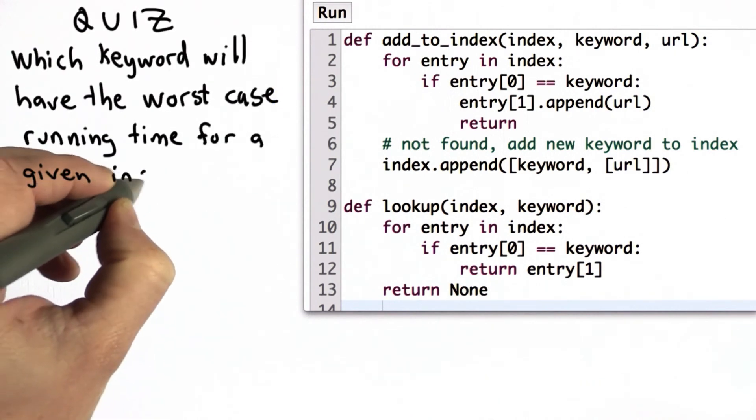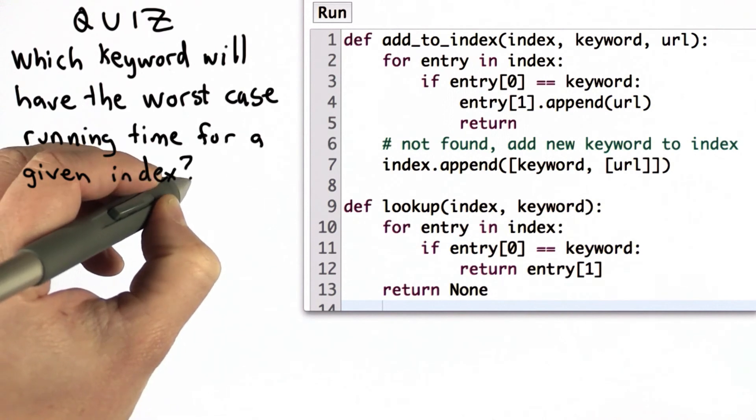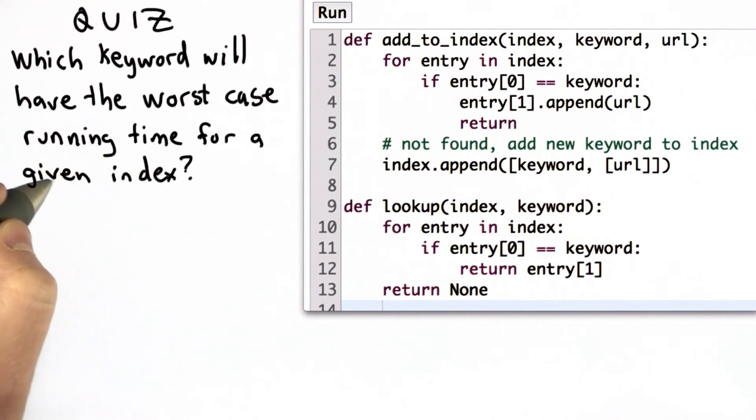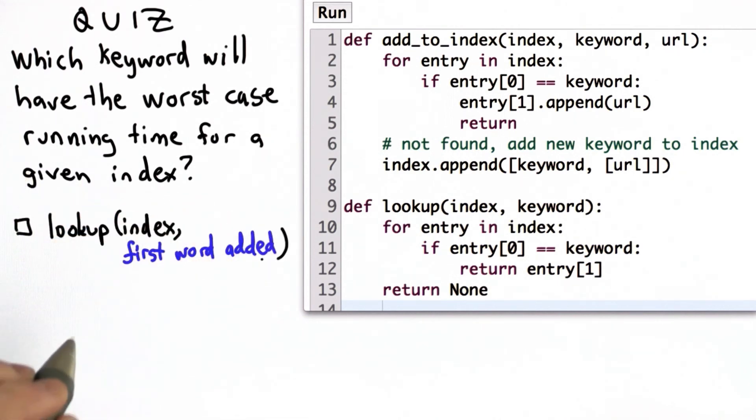So now we'll have a quiz to see if you understand what it means to be the worst case input and how the code for lookup works. The question is, which of these inputs will have the worst case running time? So the choices are doing lookup, passing in the index, and the first word that was added to the index.